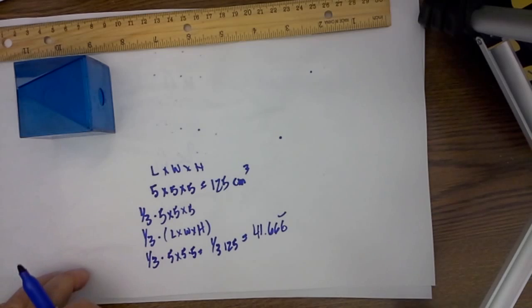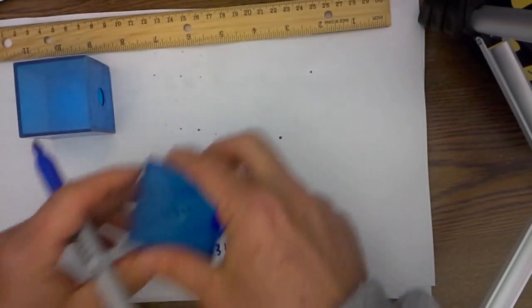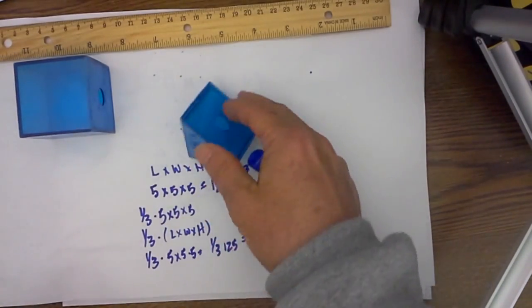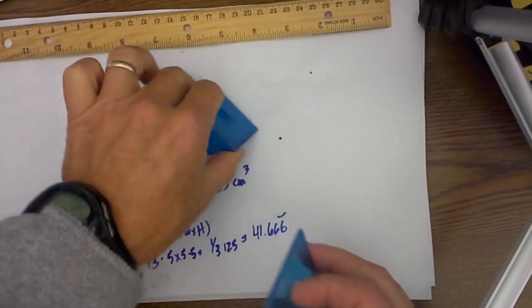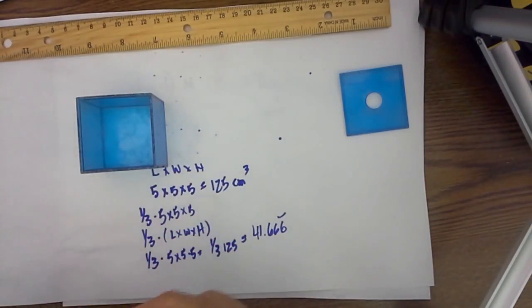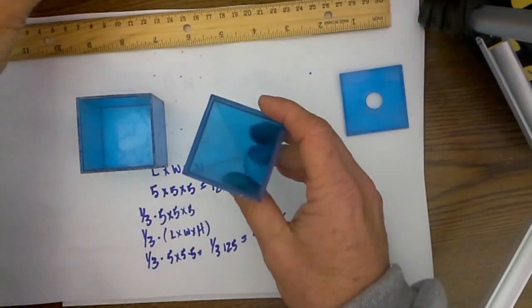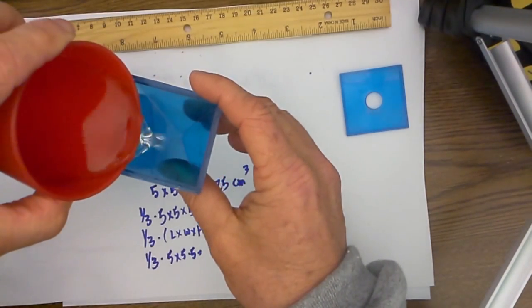So now to prove where they got this formula from I will fill up three of these pyramids with water and they should fit exactly into this container. So let's see how it goes. So here is number one.